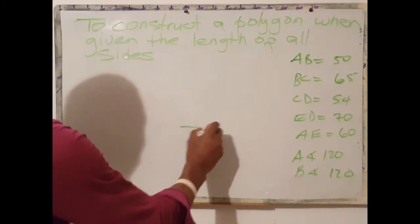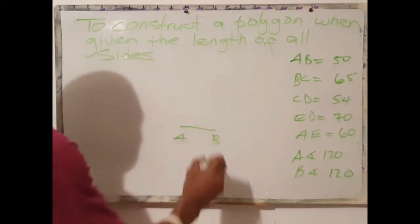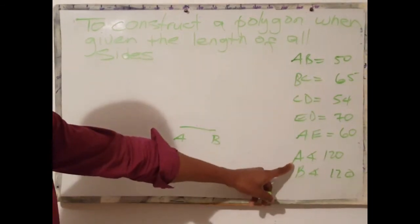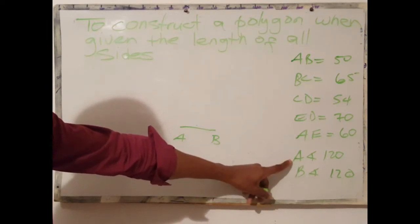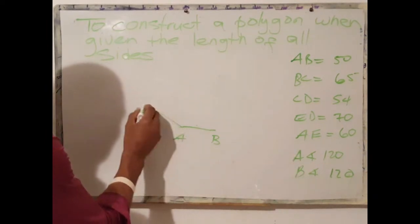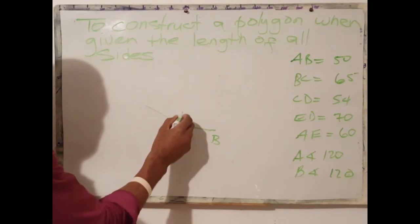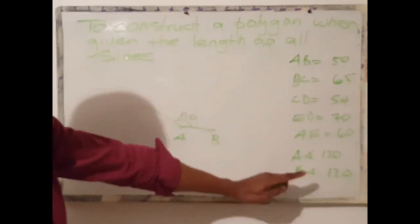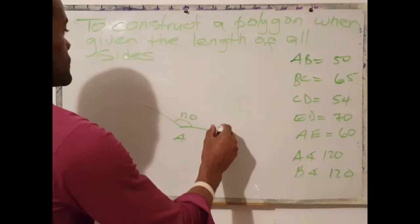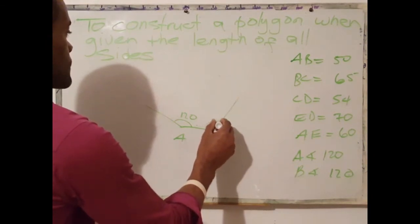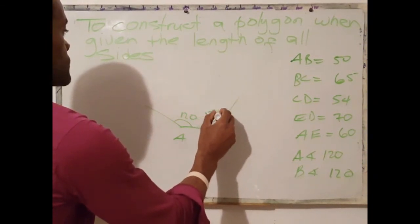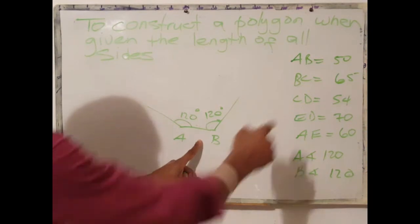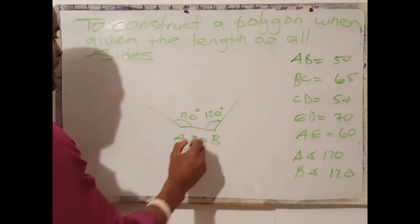Our base AB is 50 mm. We also have an angle at point A which is 120 degrees, so we sketch an angle here of 120 degrees. Point B also has an angle of 120 degrees, so we sketch those first. Side AB is 50 mm — it's good to write that in.